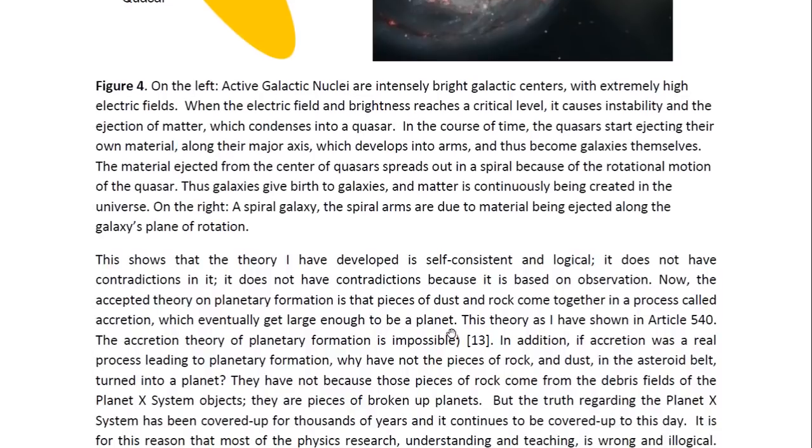So this shows that the theory I have developed is self-consistent and logical. It does not have contradictions in it. It does not have contradictions because it is based on observation. Now, the accepted theory on planetary formation is that pieces of dust and rock come together in a process called accretion, which eventually get large enough to be a planet. And this theory, as I have shown in Article 540, entitled The Accretion Theory of Planetary Formation is Impossible, is impossible.